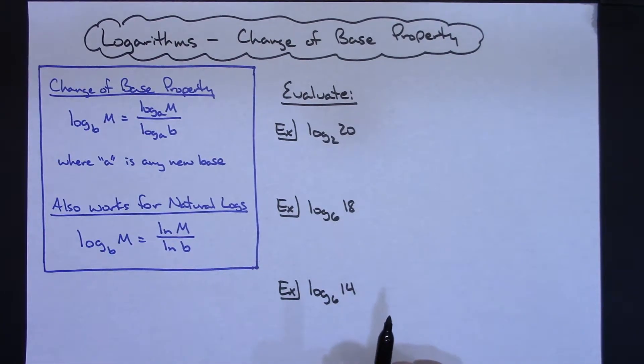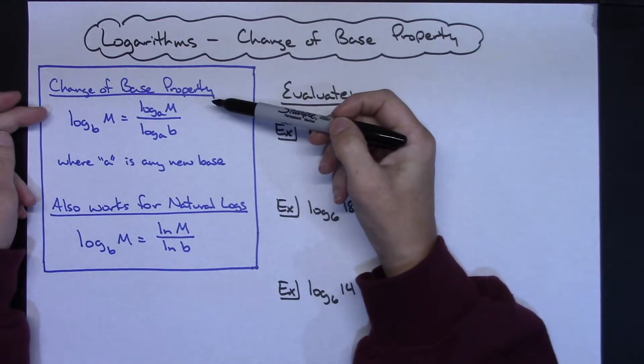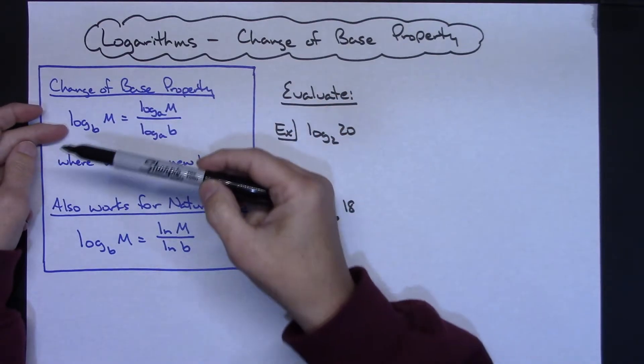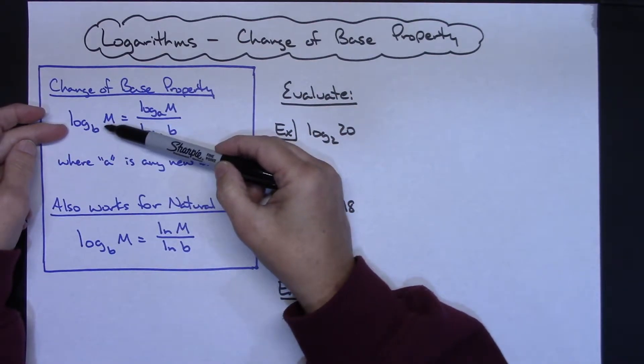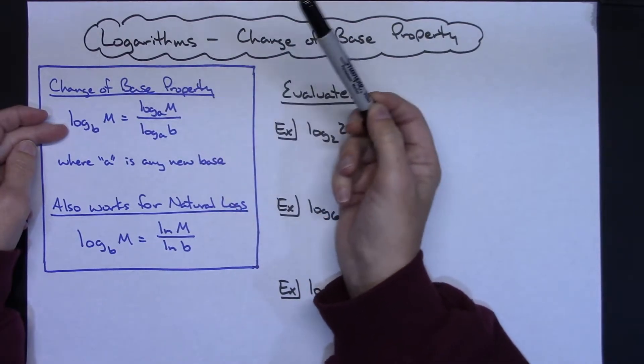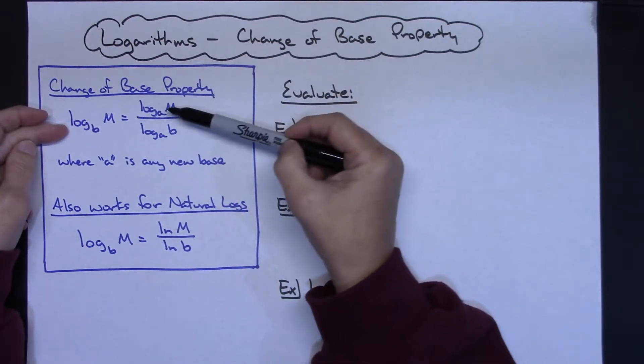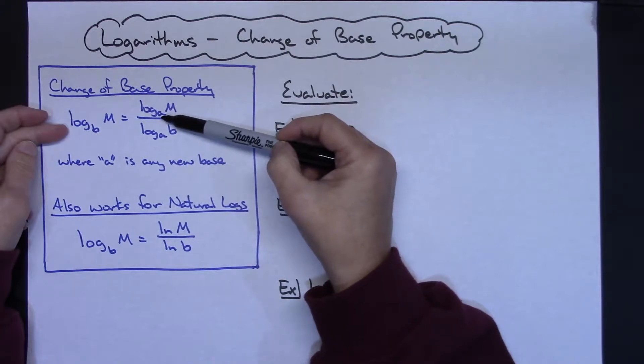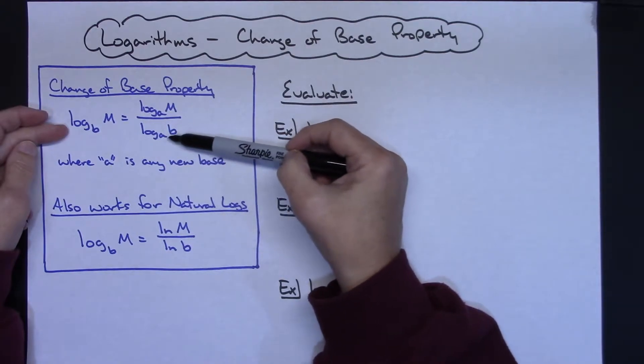In this video I'm going to take a look at the change of base property which is used with logarithms. Basically, our change of base property says that if I've got the log of M base B, I can choose any other base that I want and rewrite this as the log of M base A over the log of B base A.